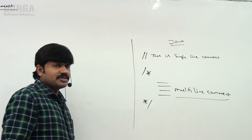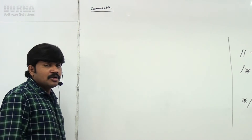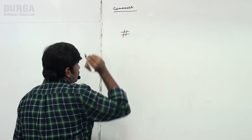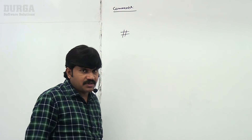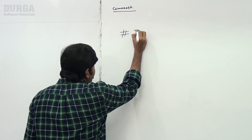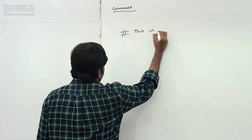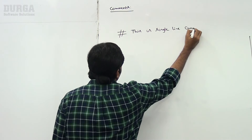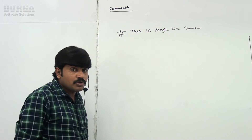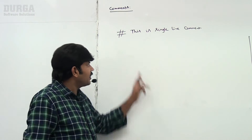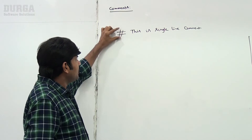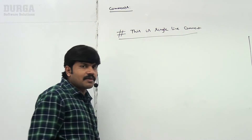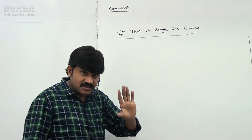In Python, how can you represent a single line comment? Very simple — we use the hash (#) symbol. Any line starting with hash becomes a comment; the Python virtual machine won't execute that line.